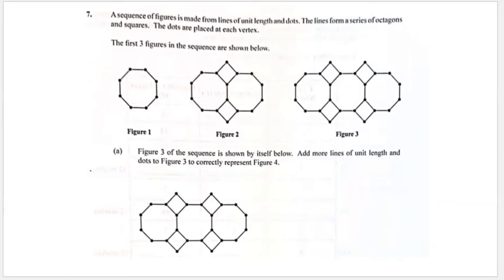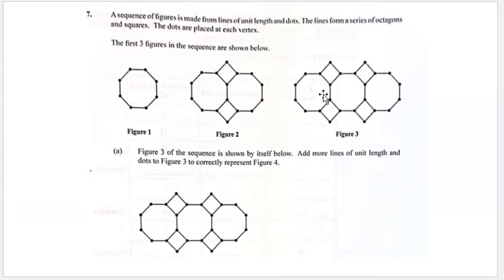Part A says Figure Three is shown by itself — add more lines of unit length and dots to Figure Three to correctly represent Figure Four. If you notice, from Figure One to Figure Two, what they did was create a square and complete another octagon. An additional eight dots were added. For Figure Three, the same thing happened — eight dots were added.